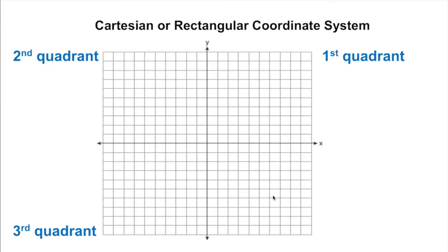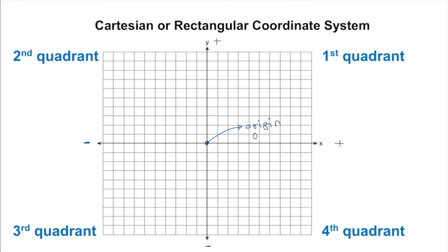Quadrant two is here, quadrant three is down here, and quadrant four is over here — so we have four quadrants. Now, what are the signs? X to the right is always positive, x to the left is always negative. Y going up is always positive and y going down, or below, is negative. The intersecting point is called the origin, and origin is always (0, 0) — x is 0 and y is 0.